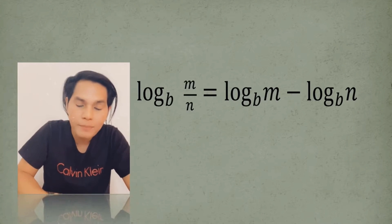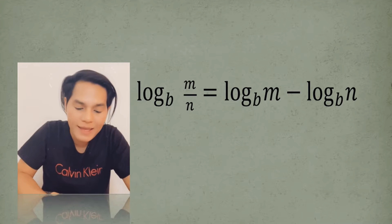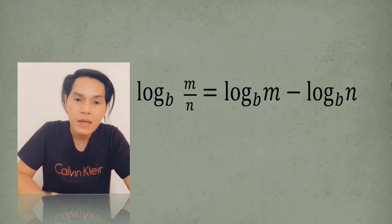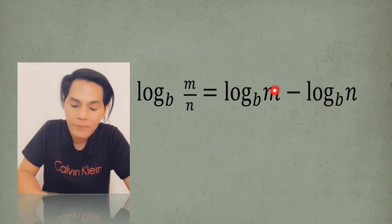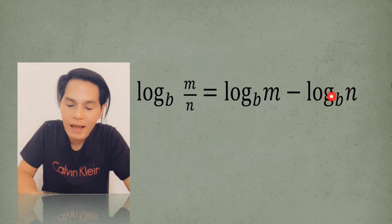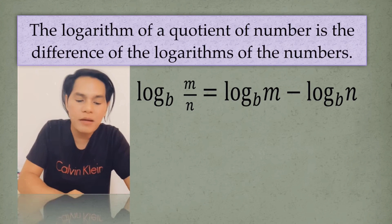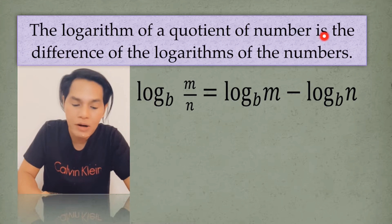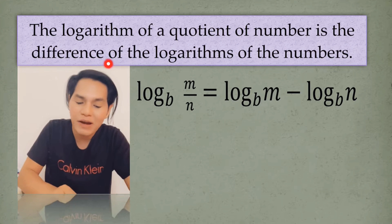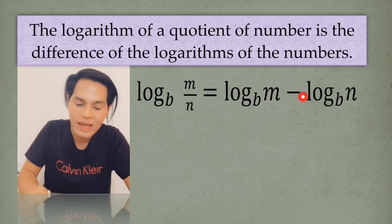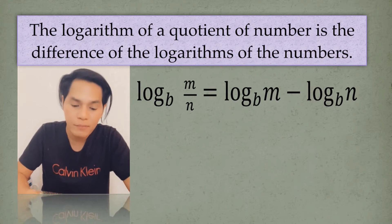The next law of logarithm is the log of m divided by n to the base b, which is equal to the log of m to the base b minus the log of n to the base b, which means that the logarithm of a quotient of numbers is the difference of the logarithms of the numbers.